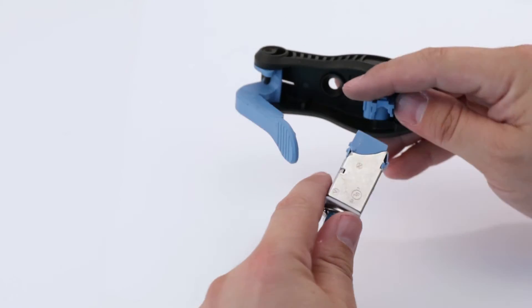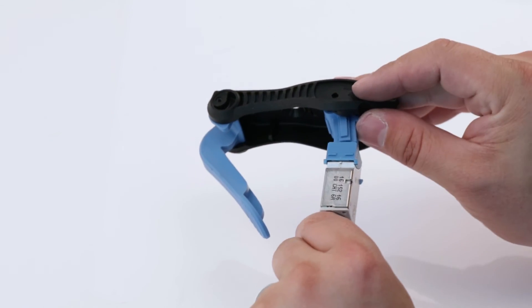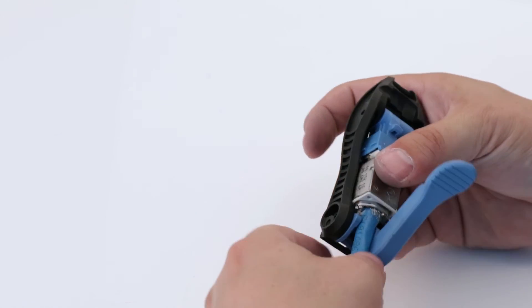Position the RJ45 jack into the keyed guide of the termination tool and then press down to seat it as far as possible into the termination tool.